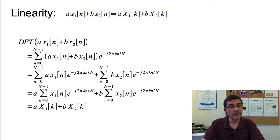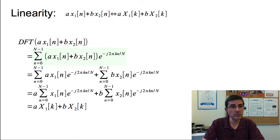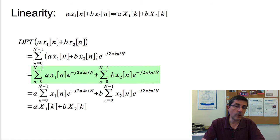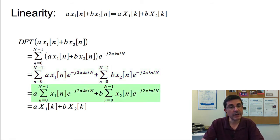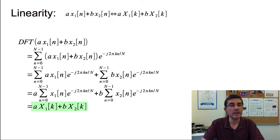It's very easy to prove. If we start with the DFT of the sum of these two signals x1 and x2, we can see easily that we can separate this summation into two sums: one for a·x1 and another for b·x2. Since the scalar values do not depend on n, we can put them outside the sum, and therefore we get a multiplied by the DFT of x1, plus b multiplied by the DFT of x2.